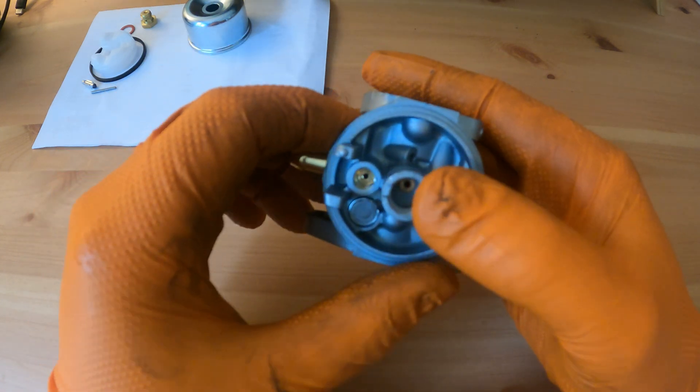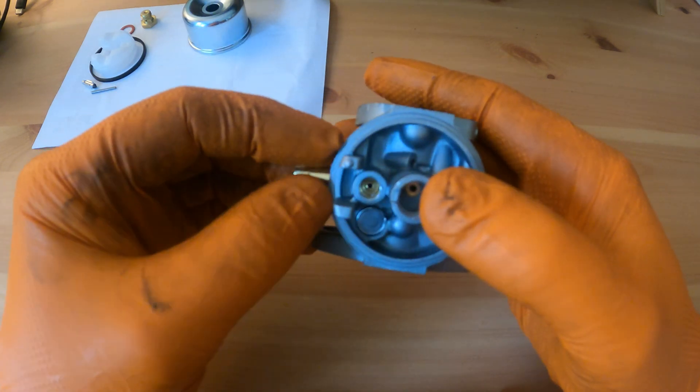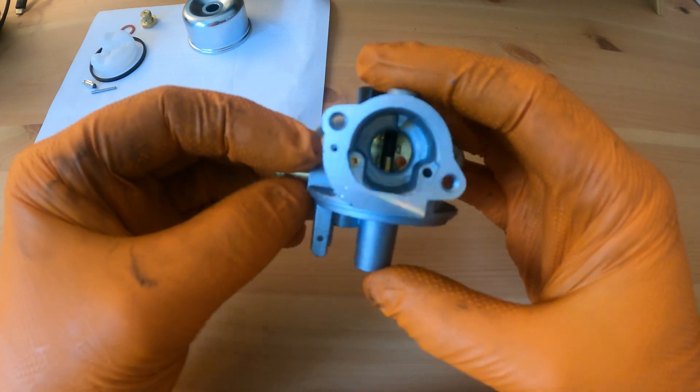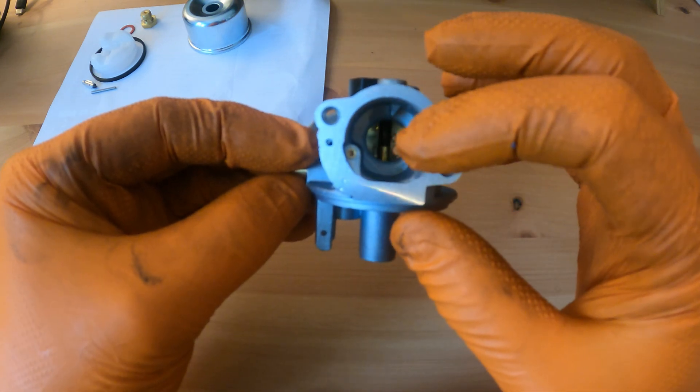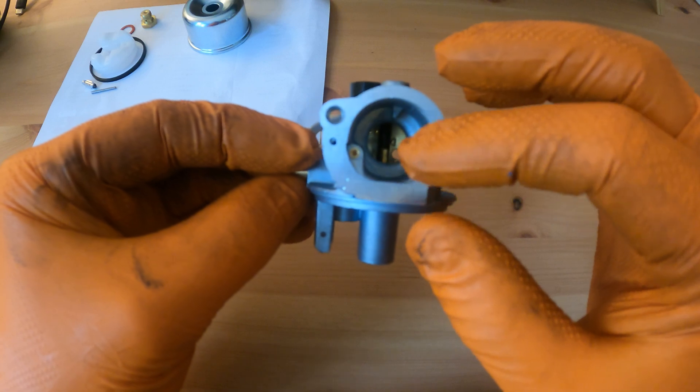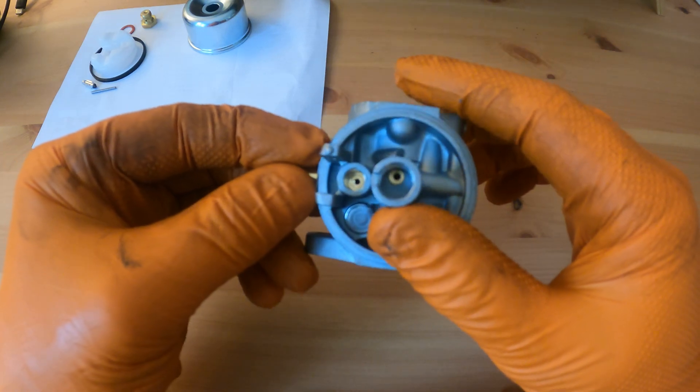It's quite a big bore on that one compared to the other main jet's orifice. We're just making sure that that's clean, so a bit of carb cleaner, compressed air, rod that through and should be good to go.